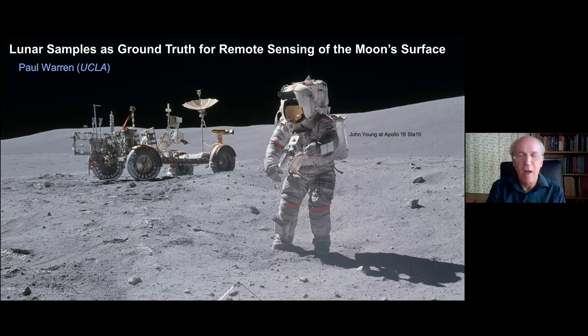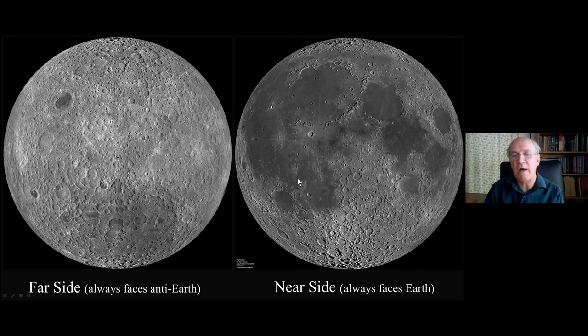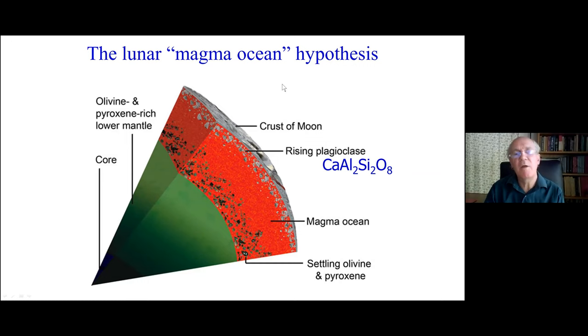I'm mostly interested in the older highland crust of the moon. It volumetrically dominates. There are two terrains: the far side that always faces away from earth is almost purely highland terrain — much older and pockmarked densely with old craters. There is the other terrain, prominent on the near side, of these dark lava flows, the maria. They're relatively young and thin. I'm interested in the bulk composition of the lunar crust, so I focus on this older highland terrain and the magma ocean hypothesis, which has been the foremost hypothesis for the origin of the lunar crust ever since a few months after Apollo 11 samples became available.